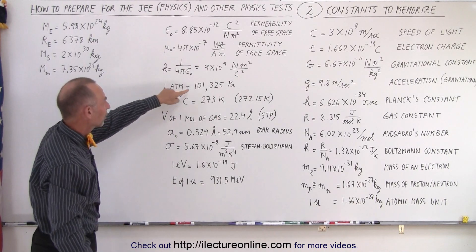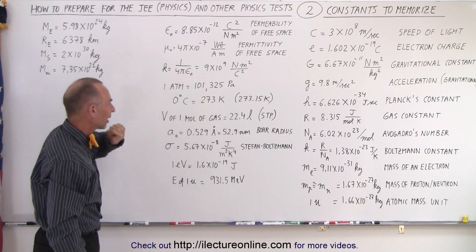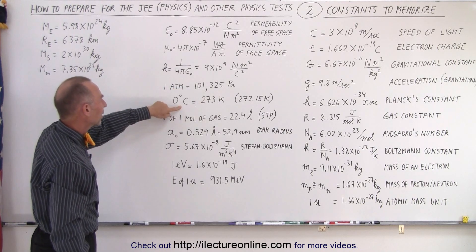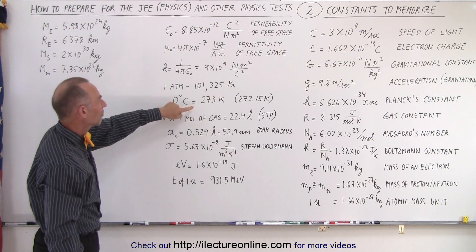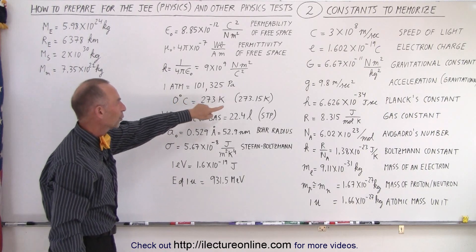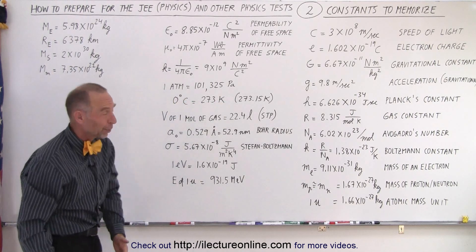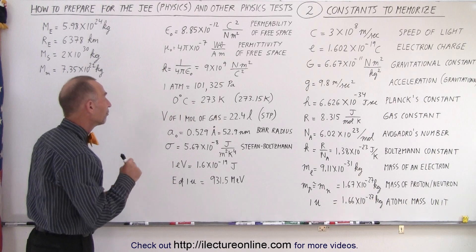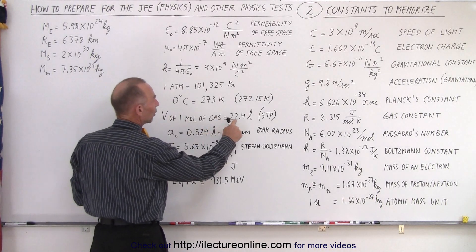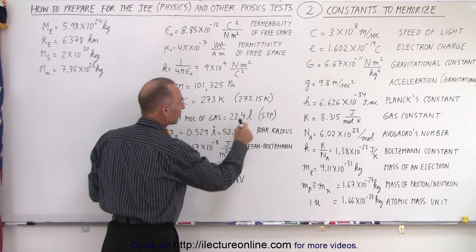One atmosphere is 101,325 pascals. Zero degrees centigrade, or zero degrees Celsius, equates to 273 kelvin, or to be more precise, 273.15 kelvin. The volume of one mole of gas is 22.4 liters at STP conditions.